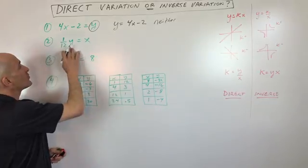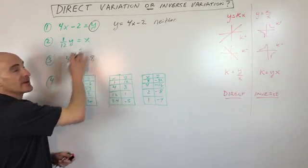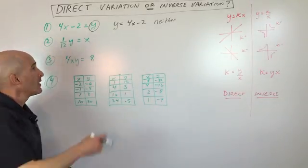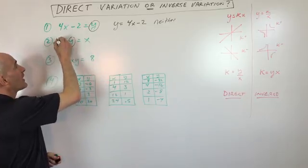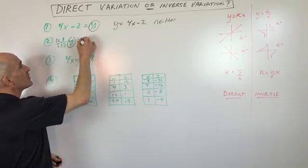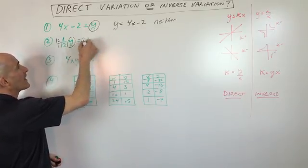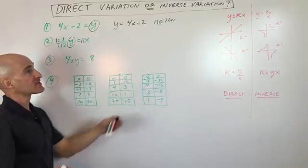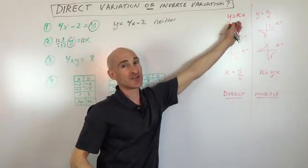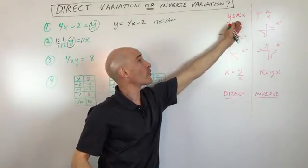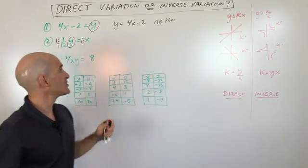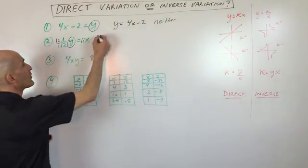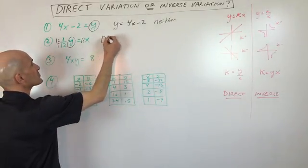Number 2: when you look at this equation, if you solve for y by multiplying by 12, you get y equals 12x. You can see it's in the direct variation format. The constant k is 12, the constant of variation. So this one is direct.